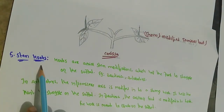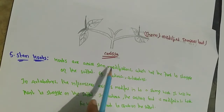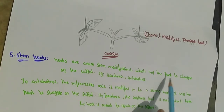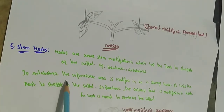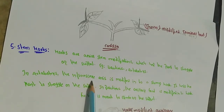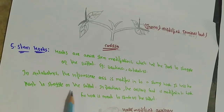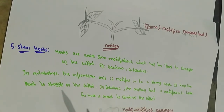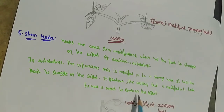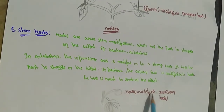Stem hooks are aerial stem modifications which help the plant to scramble on a support. Example: Bauhinia and Artabotrys. In Artabotrys, the inflorescence axis is modified into a strong hook. Inflorescence means the arrangement of flowers. In Bauhinia, the axillary bud is modified into a hook, which helps the plant climb on support.